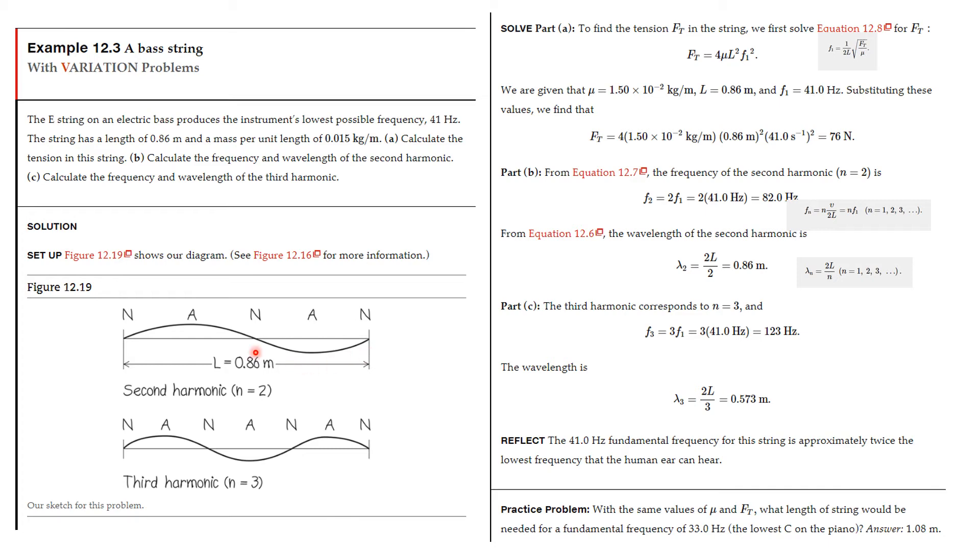Here's the picture: the second harmonic has two components, one and two. The third one has three: one, two, and three. We know we have this equation: F1 equals, and we have Ft, so we solve for Ft. You should verify these calculations, but Ft equals 4 mu L squared F1 squared. We know mu is this number, L is this number, and F1 is that number, so we substitute. You should verify these calculations; that's really good practice. You get 76, and the units are newtons. So we use this equation, solve for Ft, and substitute the numbers in.